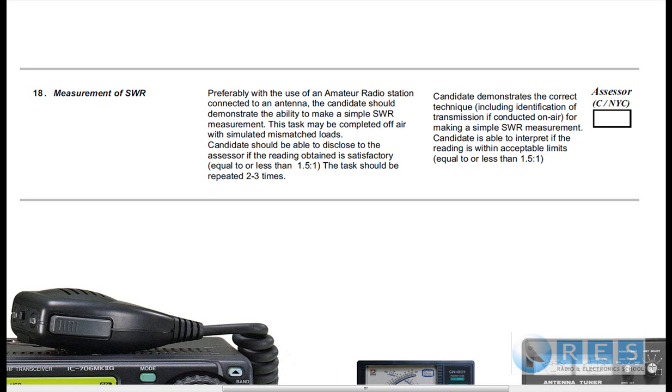The middle column is the method. Preferably with the use of an amateur radio station connected to an antenna, the candidate should demonstrate the ability to make simple SWR measurement. This task may be completed off-air with simulated mismatched loads. The candidate should be able to disclose to the assessor if the reading obtained is satisfactory, that is equal or less than 1.5 to 1. The task should be repeated 2 to 3 times.